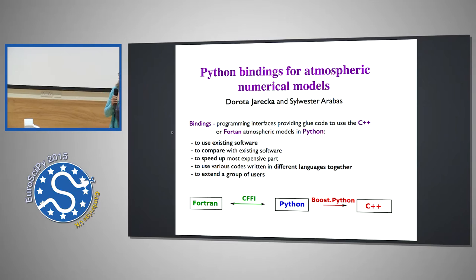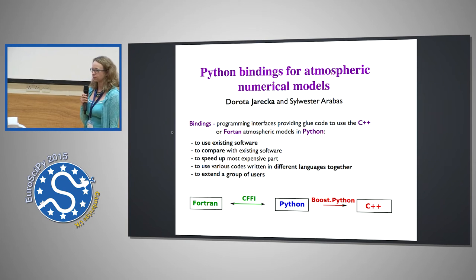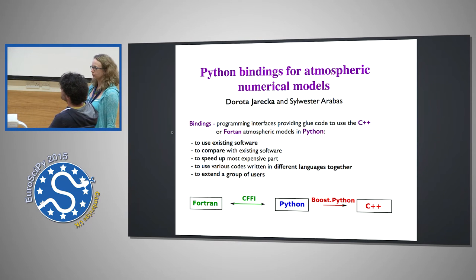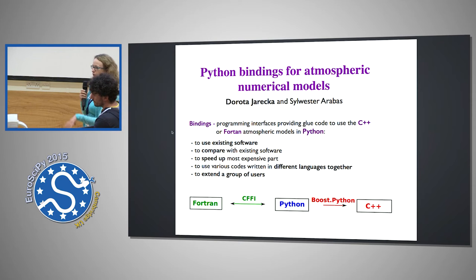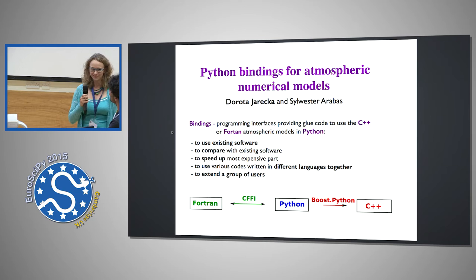My poster is about the bindings that I've been working on recently. You can have different motivations to write bindings. Our main motivation to write bindings to C++ was to extend the group of users of our library. At the same time, I wanted to compare the results with an old Fortran implementation, so I worked with CFFI on Fortran bindings. We ended up joining intercomparison studies performed in Fortran, so we had to use Python to call Fortran code that uses C++ at some point — and it really works.